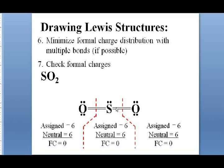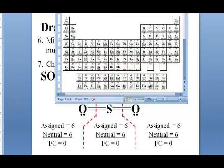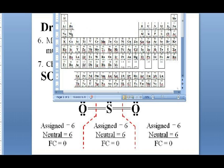Sulfur now has ten electrons around it — more than an octet. We usually try to avoid that, but as long as we're below the second row of the periodic table we can violate the octet rule if it makes for a more stable structure. Anything in the n=3 row of the periodic table or lower can violate the octet rule if necessary. If there's no reason to violate it, don't — but if we can eliminate all formal charge by doing so, that's preferred. You cannot violate the octet rule in the second row: carbon, nitrogen, and oxygen will never have more than eight electrons around them.